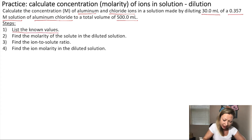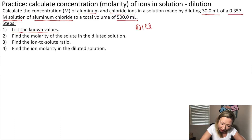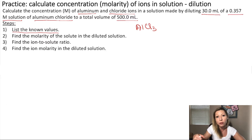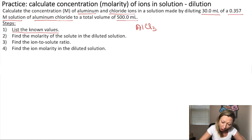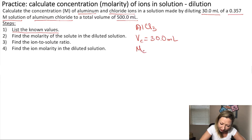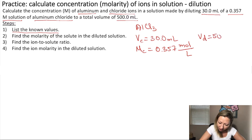The first step is that we have to list the known values. We know that we have aluminum chloride as our solute. Because aluminum ions are always 3+ and chloride ions are 1-, the formula for aluminum chloride is AlCl₃. The volume of the concentrated solution was 30 milliliters, the molarity of the concentrated solution is 0.357 mol per liter, and the volume of the diluted solution is 500 milliliters.